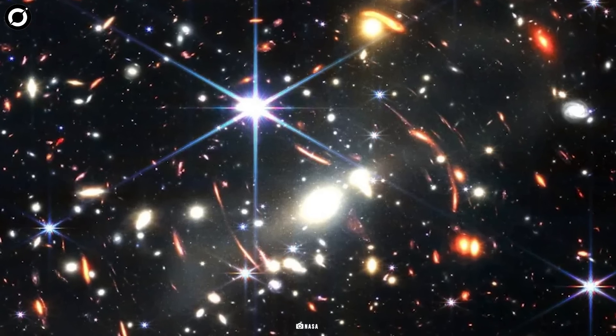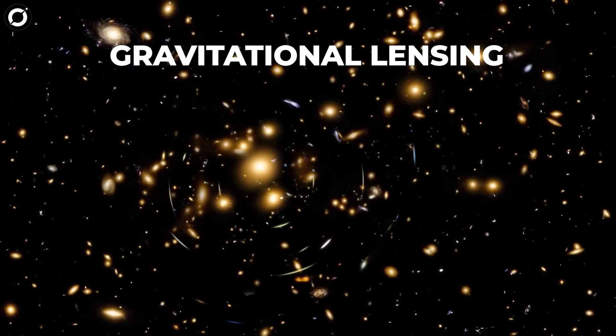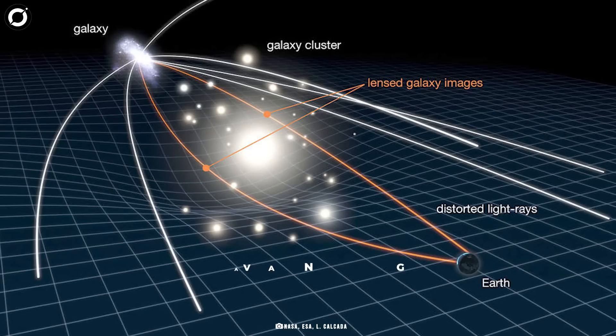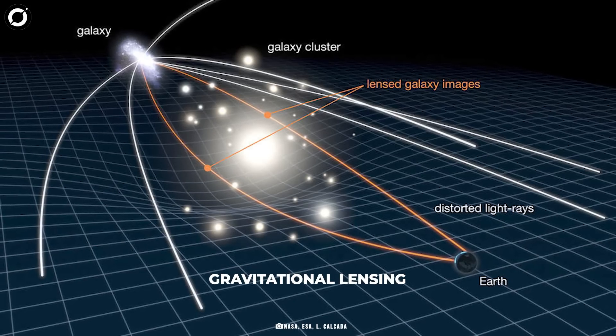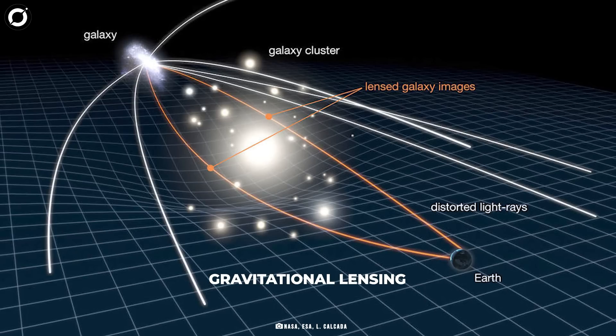If you wonder how the James Webb telescope can observe such tiny details in a wide enough field to capture the entire galaxy cluster at once, it is mainly because of a phenomenon called gravitational lensing.